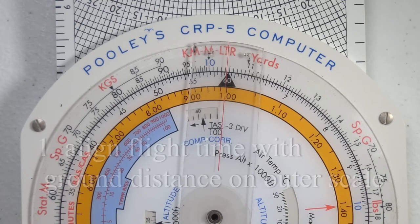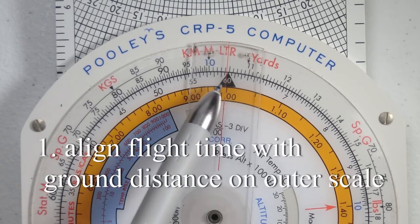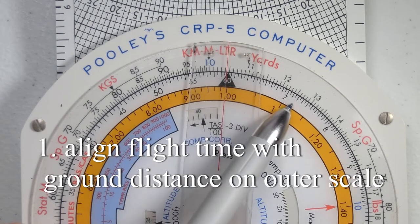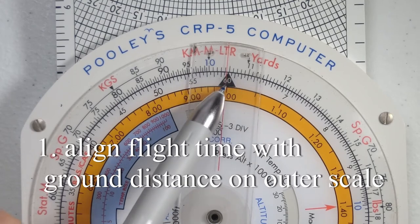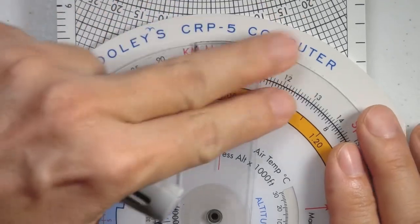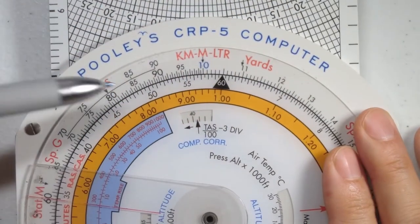So step one is to move 53 minutes, and remember time is on the inner scale and we are going to look for 53. And 60 represents 6, and 53 would therefore be somewhere over here. 51, 52, 53.